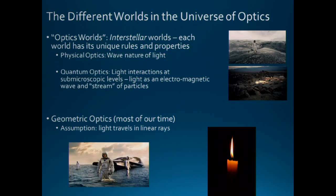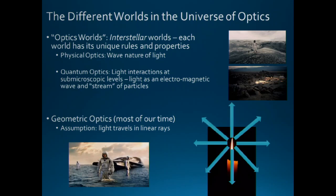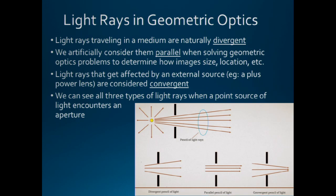One of the key assumptions in geometric optics is that light travels in linear rays. Here we have a point source of light, and the light rays move in a straight line in every direction from that source. This assumption is what allows us to solve problems ranging from u plus d equals v to Prentice's rule to mirror problems.